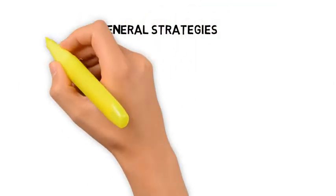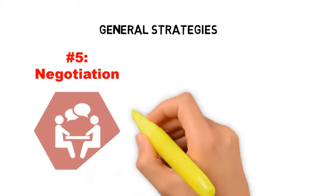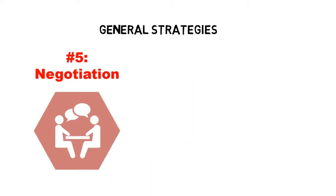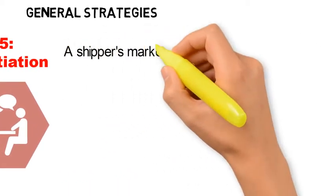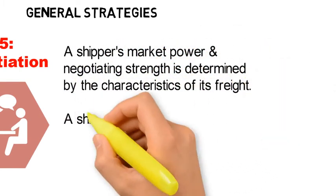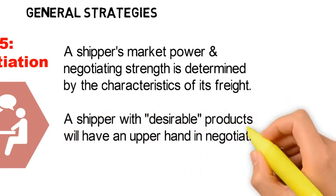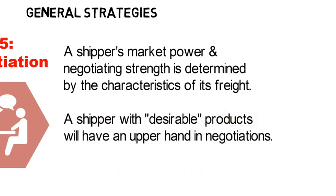The fifth general strategy is negotiation. A shipper's market power and negotiating strength is determined by the characteristics of their freight. A shipper with desirable products will have the upper hand in negotiating with carriers and should utilise this advantage. A desirable product would be something that is high value, difficult to damage, and moved in large volumes regularly. Conversely, undesirable products are low value, easily damaged, or moved in very small volumes.